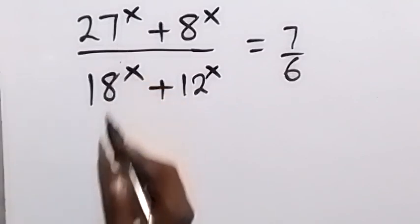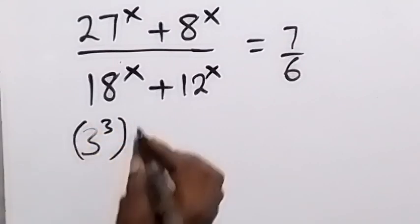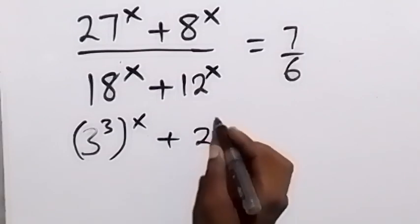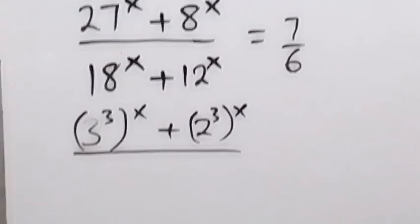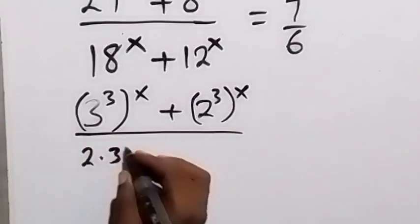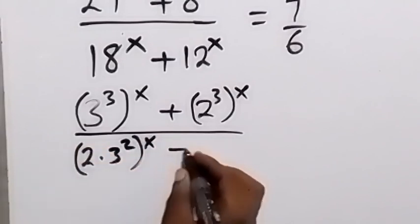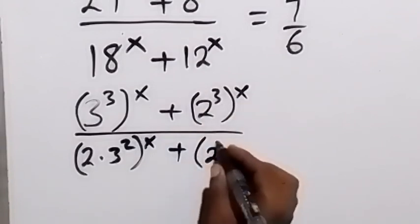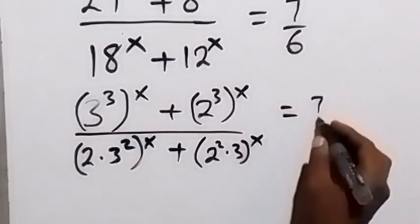From here, let's express 27 as 3 raised to power 3, then raised to power x, plus 8 can be expressed as 2 raised to power 3, then raised to power x. In the denominator, 18 can be expressed as 2 times 3 squared, then raised to power x, and 12 as 2 squared times 3, raised to power x. This equals 7 over 6.